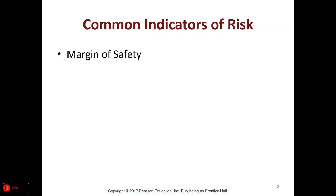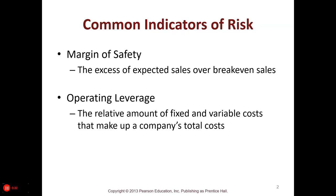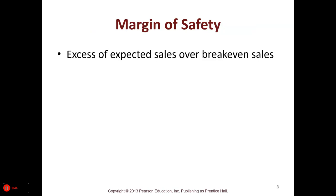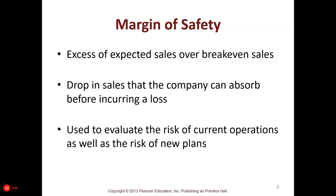Common indicators of risk include the margin of safety — it tells you how much your sales have to fall before you start losing money. It's the excess of expected sales over break-even sales. It represents the drop in sales that the company can absorb before incurring a loss, and is used to evaluate the risk of current operations as well as the risk of new plans.